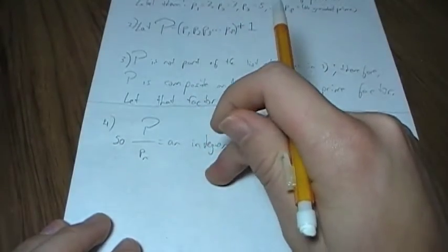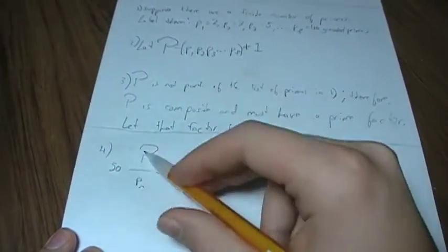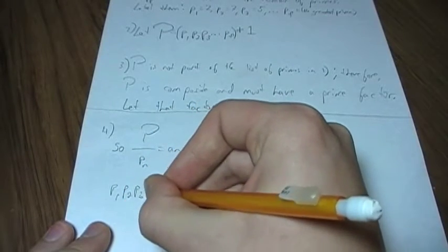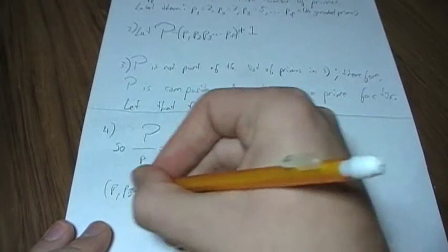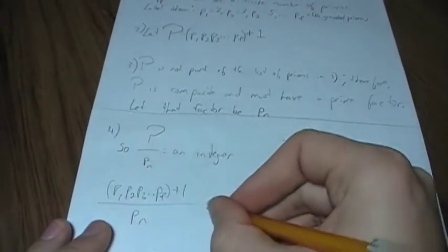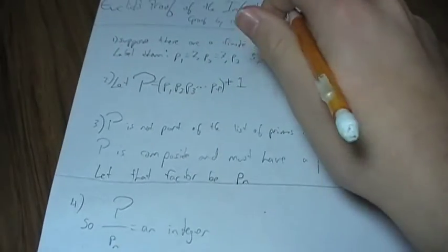And this is where the contradiction arises. Substitute the value here for P. And this is supposed to be an integer, if the initial assumption is right. Break this down, Euclid says.